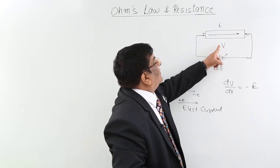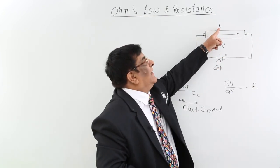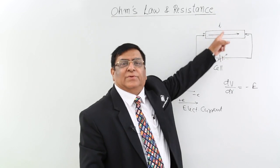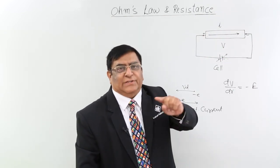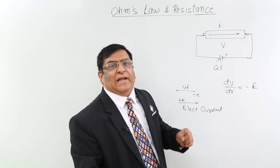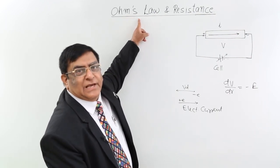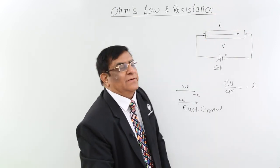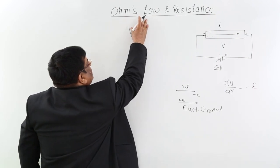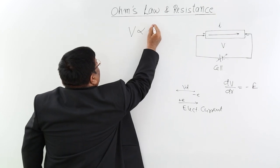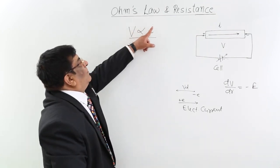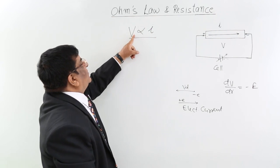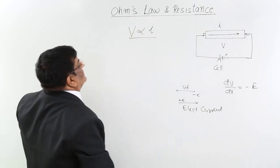We can change this potential difference using certain devices. When we increase the potential difference and make it double — 2 times — we see that the current has also increased 2 times. We make the potential 3 times, the current has increased 3 times. By observing this, Ohm declared for the first time: if you change the potential, I will change, and that will be in direct proportion. Direct proportion means V is directly proportionate to I, and both have power 1 — if you change V 3 times, I will change 3 times.